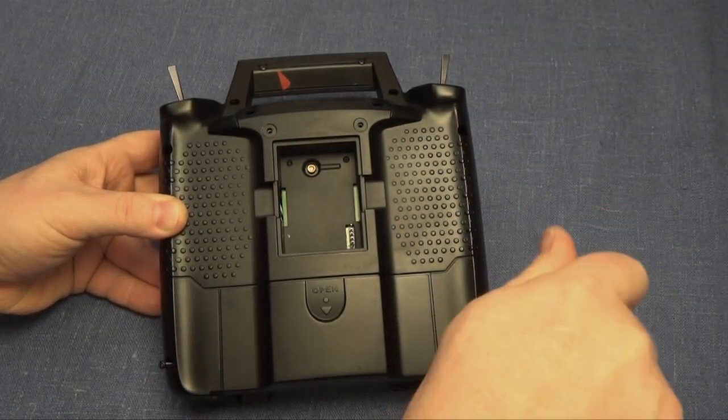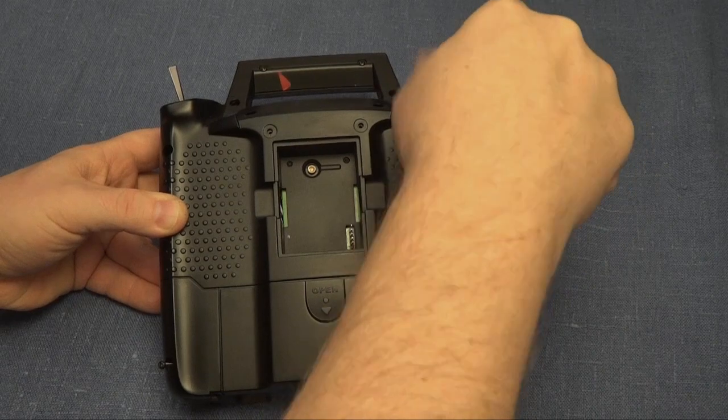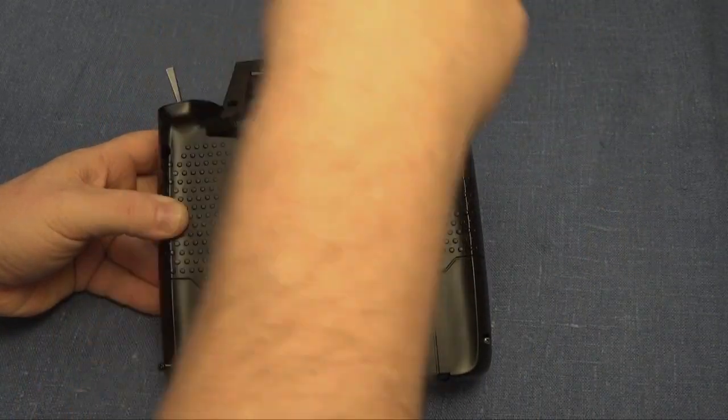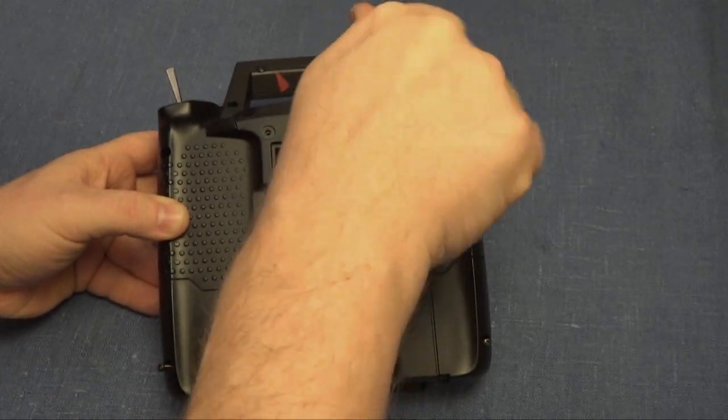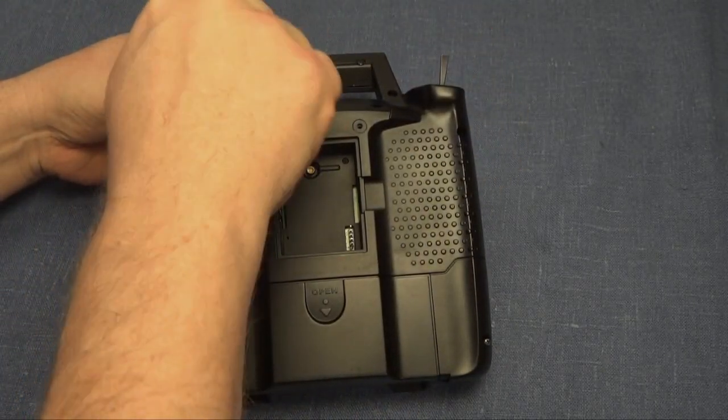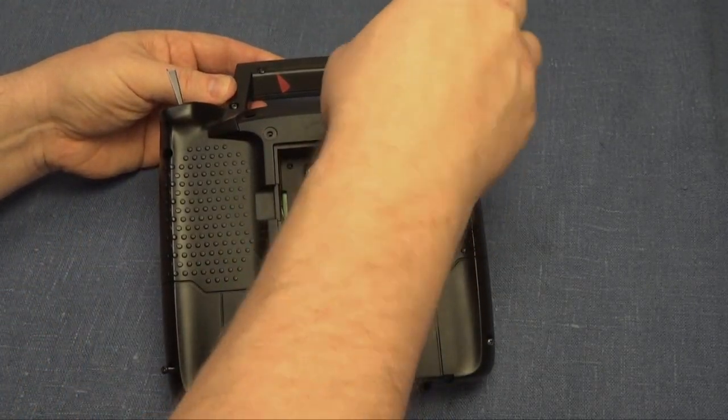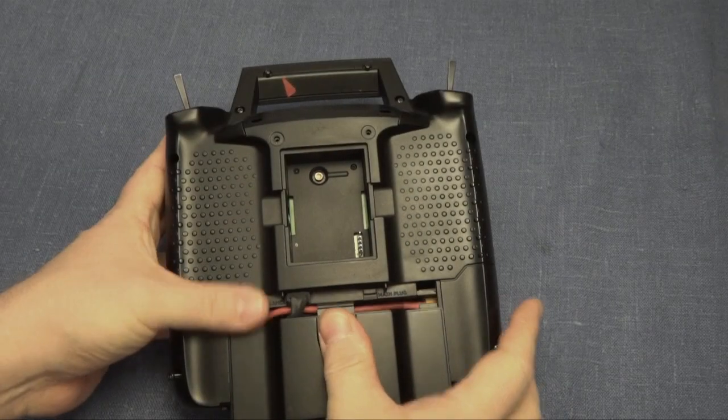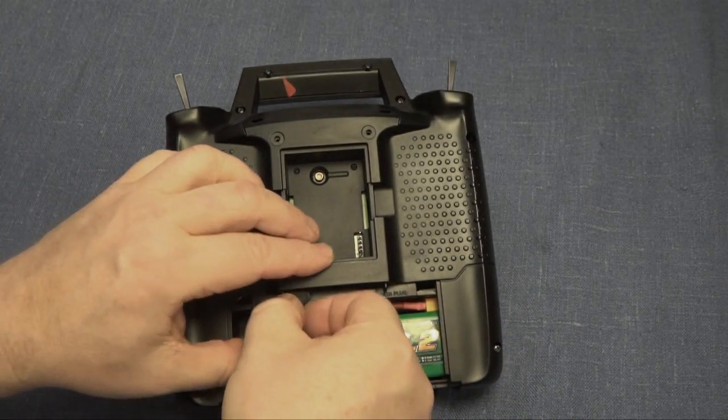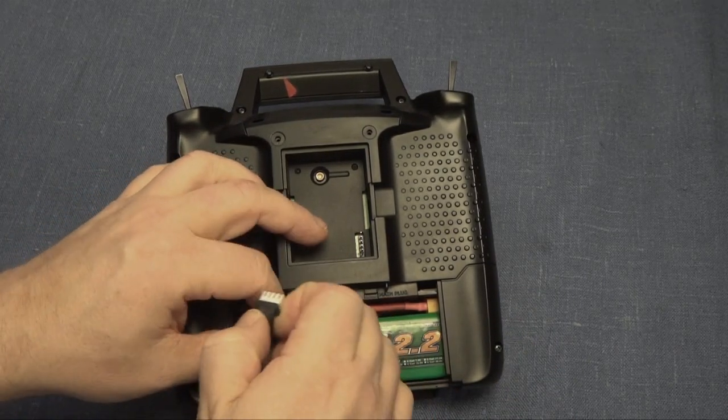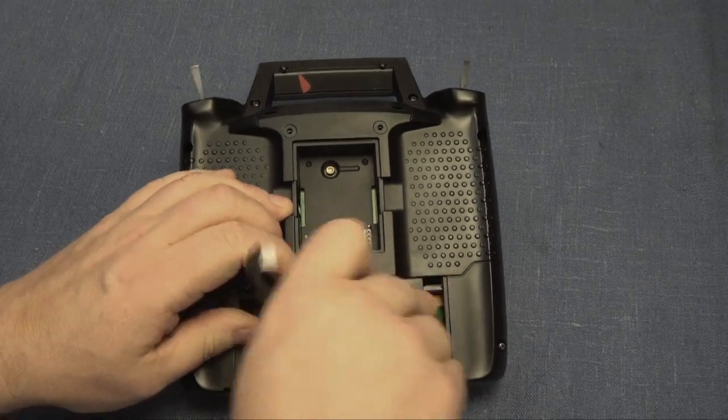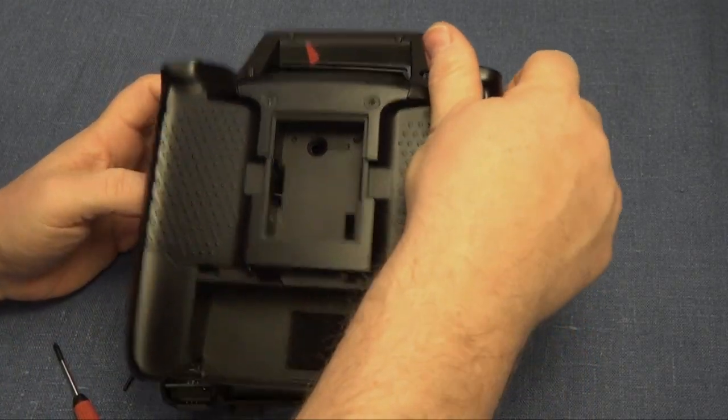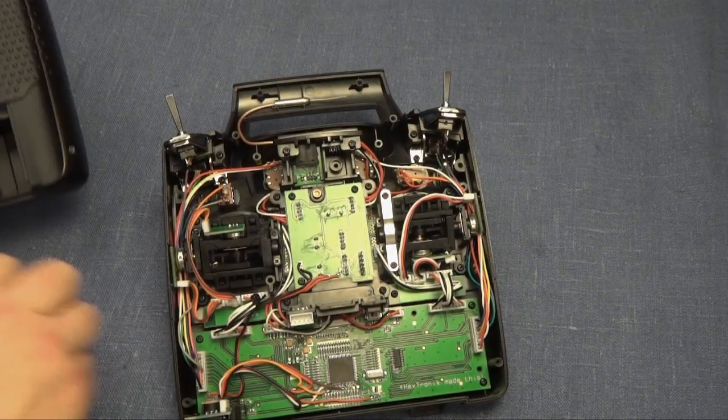Let's start by removing all 10 screws. I've sped up the tempo a bit so you don't need to spend too much of your time looking at me unscrewing things. Pop off the battery lid and connect the battery. And there the back side comes off. There is nothing connected to it so just put it aside.